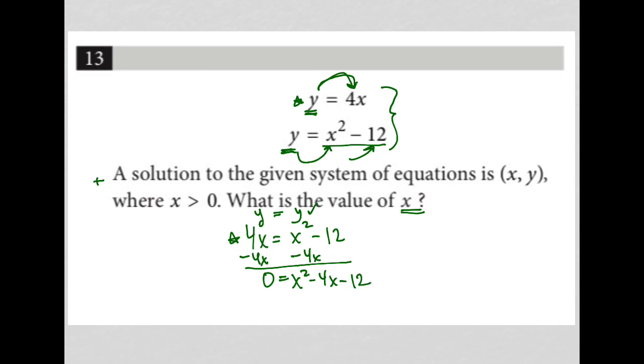Now I'm trying to solve for x, so I can factor this trinomial. Let's see. What are two numbers that multiply to equal negative 12 but add up to negative 4?